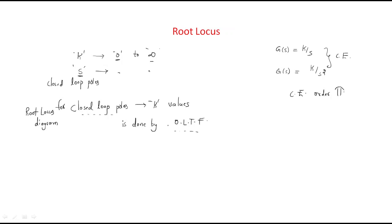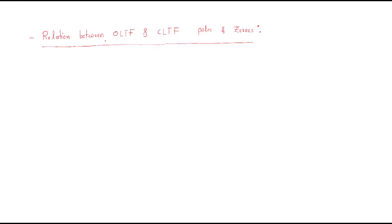So how is it possible to discuss closed-loop poles using the open-loop transfer function? We need to find the relation between the open-loop transfer function, closed-loop transfer function, and their poles and zeros. The open-loop transfer function G(s)·H(s) has open-loop poles and open-loop zeros.